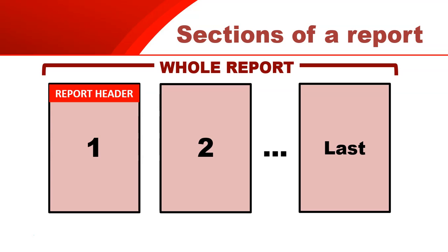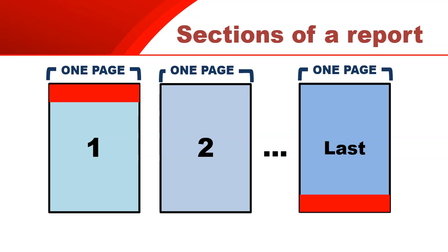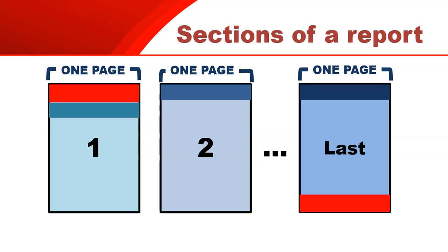The report header is the top of the first page, and if I want to go to the bottom of the last page, that's the bottom of the whole report — that would be the report footer. The report header is at the top of the whole report, and the report footer is the bottom of the report, which is the bottom of the last page. A report consists of different pages — page one, page two, numerous pages up to the last page, each one a separate page. At the top of each page, just underneath the report header, that is the page header.